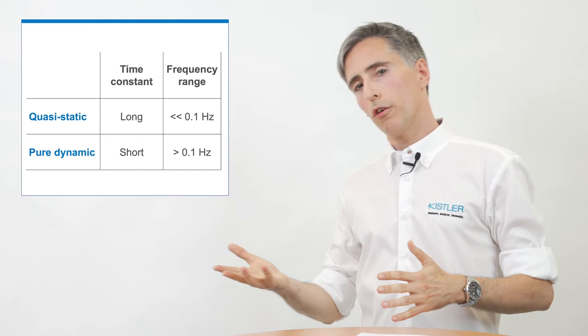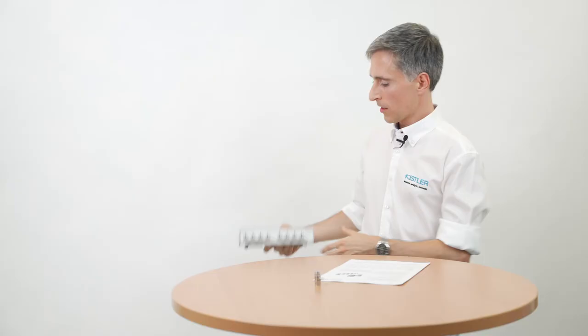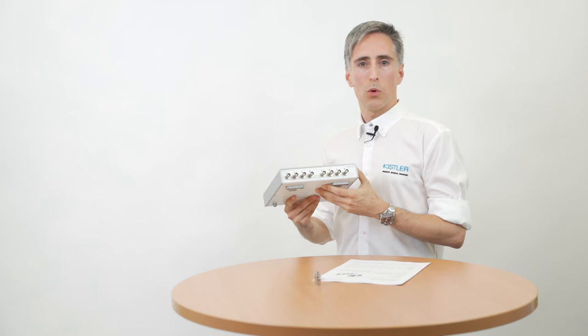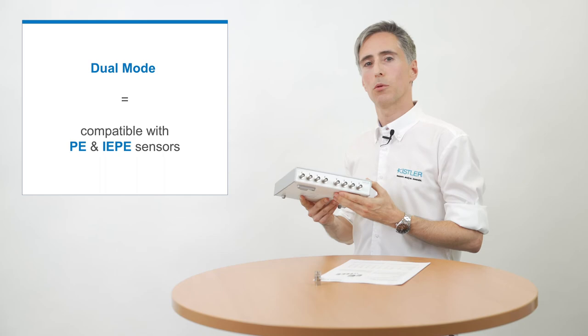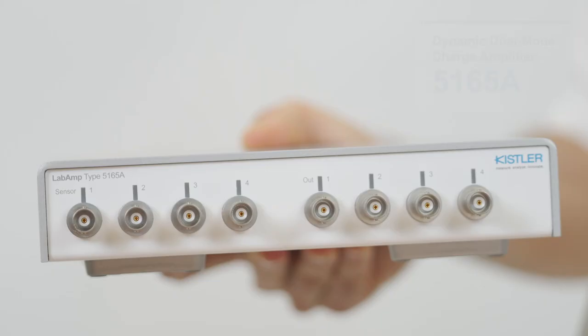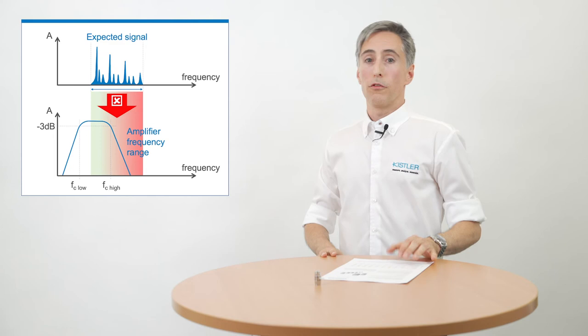Pure dynamic amplifiers for frequencies above 0.1 Hz can be built in a more efficient way since phenomena like drift by low insulation are filtered away by the high-pass characteristic of such pure dynamic amplifiers. The LabAmp 5165A, a very versatile dual-mode charge amplifier and data acquisition device, is a very good example of such a pure dynamic amplifier.